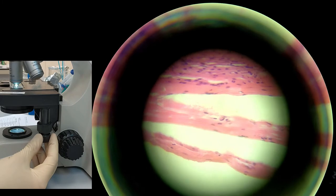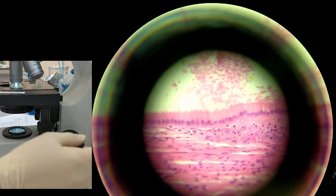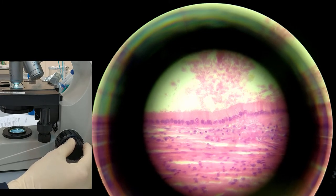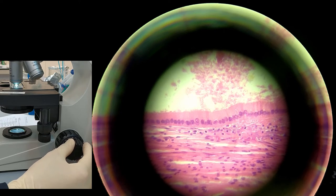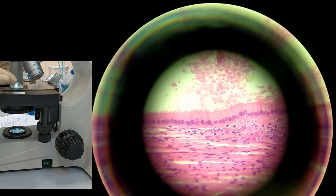Find the best view and draw it. As you can see here, these cells look like columns. That's why this is the simple columnar epithelial tissue.